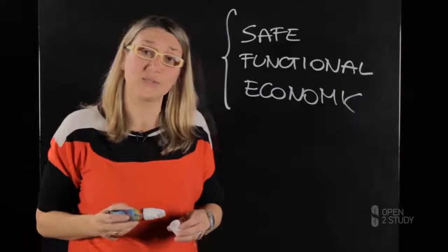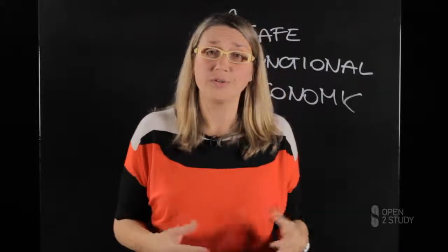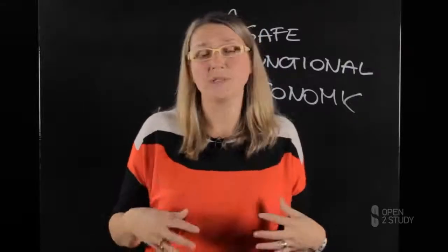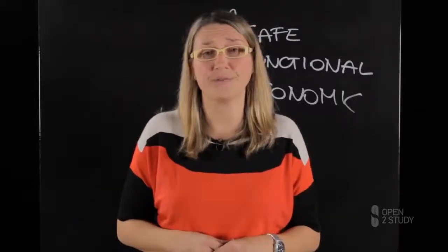In order to have a safe, functional, and economic slope design, three main aspects should be taken into account: the overall slope angle, the configuration of benches, and the ramps and inter-ramp configuration, or inter-ramp angle. Benches should have a face angle that allows a stable face and crest, a sufficient width to mitigate the danger of rockfall from the slope above and to provide access for working personnel and equipment.